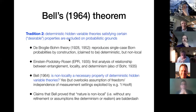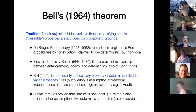Tradition two, in polemic union with the other one, is that it's not so much value assignments that are challenged, but this tradition tries to exclude deterministic hidden variable theories satisfying certain desirable properties — excluded now on purely probabilistic grounds.